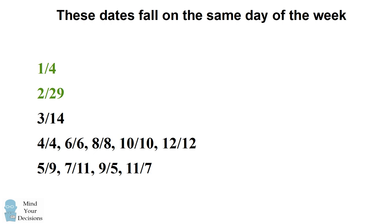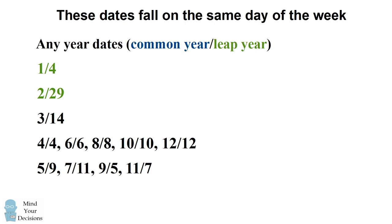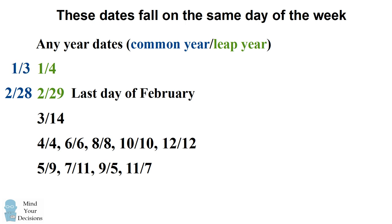Now if you want to extend this method for any other year, there's one slight modification you want to make. The dates 2-29 and 1-4 apply only for leap years. In a common year, which is not a leap year, it's going to be one day before the days given in February and January. So the last day in February in a leap year is 2-29, but in a common year it's 2-28. And for January 4th — which we remember for leap years every 4 years — in a common year, which is the other 3 years, it happens on 1-3. You can apply the Doomsday method by remembering these dates for common years and leap years; they will always fall on the same day of the week.